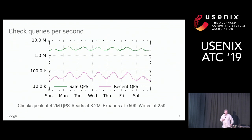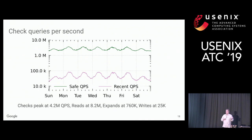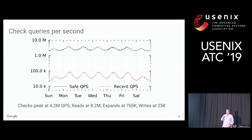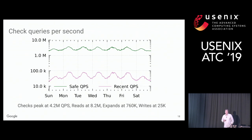In terms of load during a typical week, we classify check queries as either safe or recent. A safe request is one where the timestamp requested by the client is at least 10 seconds old — almost guaranteed to find data at a nearby server since Spanner replicates worldwide with an eight-second replication heartbeat. A recent request has a timestamp less than 10 seconds old, sometimes requiring a faraway server. The great majority of requests are safe: about 4 million QPS peaking each week for safe, versus only about 100,000 for recent.